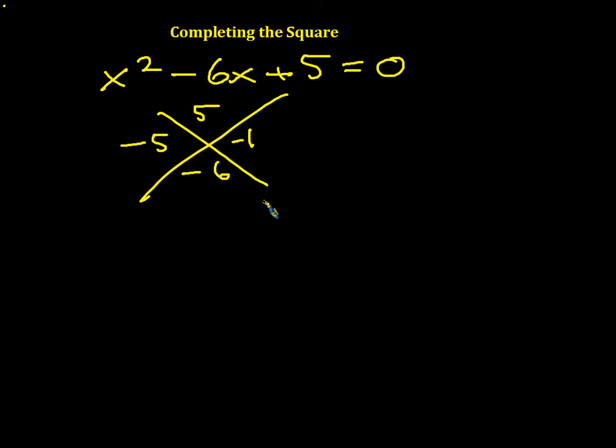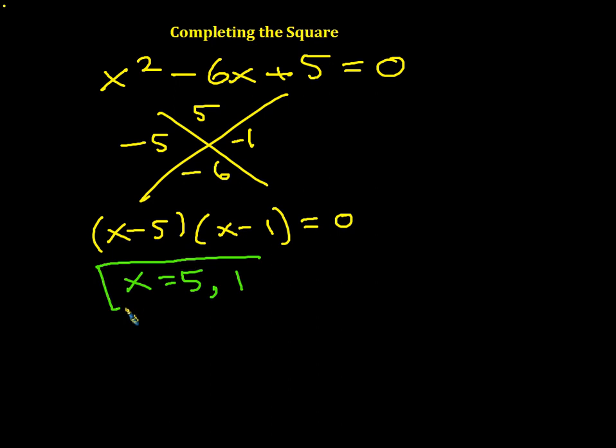So I think what happens here is we factor this and we get x minus 5 times x minus 1 are the factors, and it makes it really easy to solve this equation. So now we know that our solutions are going to be x equals 5 and 1, and we're done.